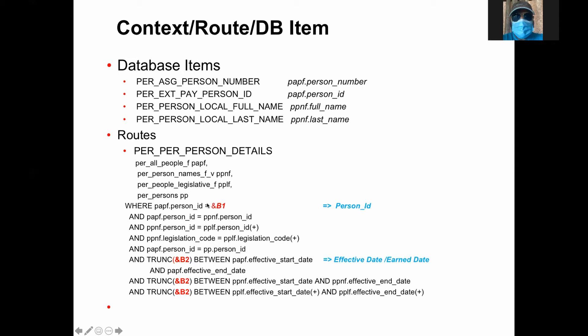What we call the source of information — where the information comes from and what the conditions are — that whole thing is called routes. And the red part — the parameters — we call it context. In this case, there are two contexts passed in: one is a person ID, and the other is some date, which could be effective date or hire date. In this case it is effective date. So the DBAs are extracted from routes for a context.